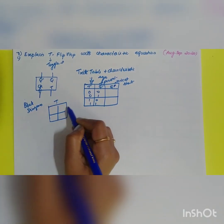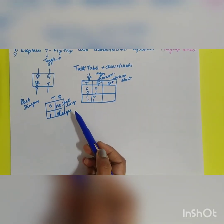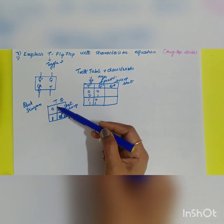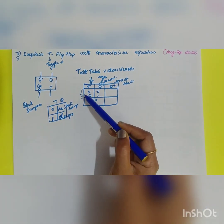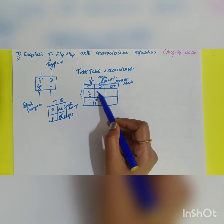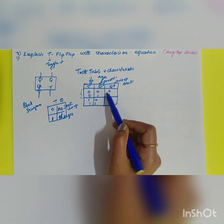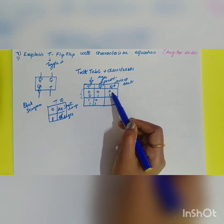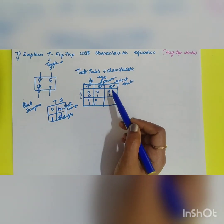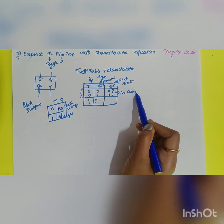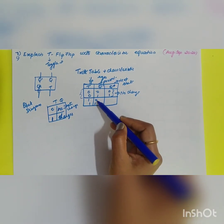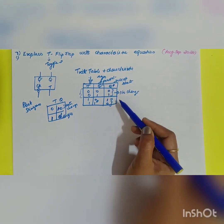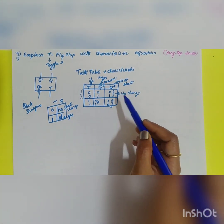When T is equal to zero, there is no state change — whatever the previous value, the next state remains the same. So if Q=0, Q+ =0; if Q=1, Q+ =1. When T is equal to one, the state toggles: if the present state is zero, the next state becomes one, and if the present state is one, the next state becomes zero.